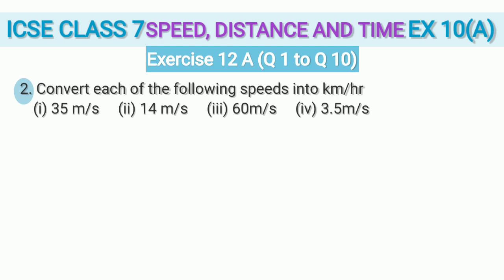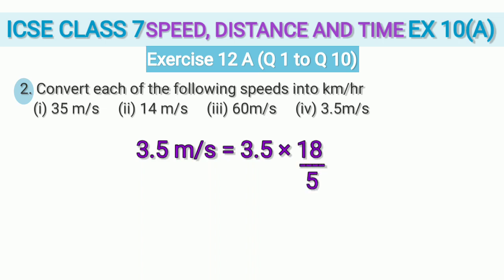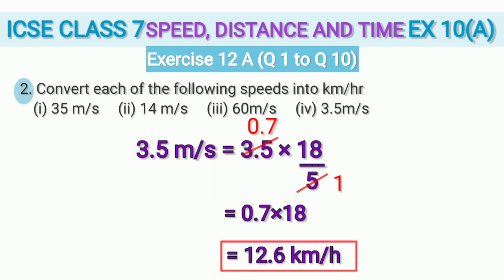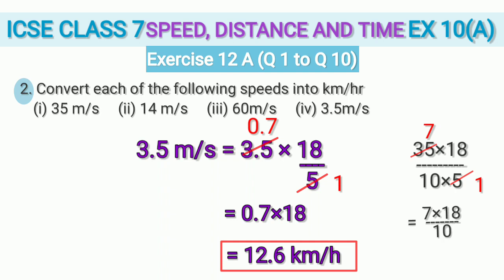In the fourth sub-question, convert 3.5 m/s to km/h by multiplying by 18/5. Cancelling 3.5 using the 5 times table gives 0.7, and 0.7 × 18 = 12.6 km/h. An alternative method for decimals: write 3.5 as 35/10, then multiply by 18/5. Cancel 5 and 35 — 5 sevens are 35 — giving 7 × 18/10 = 126/10 = 12.6 km/h. So question 2 is done.